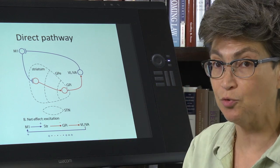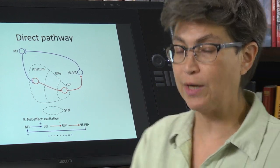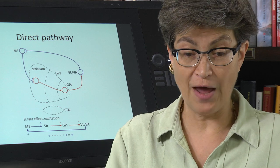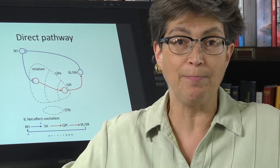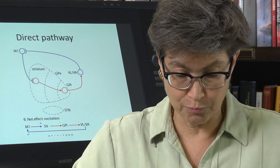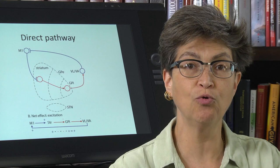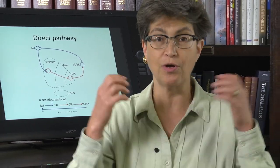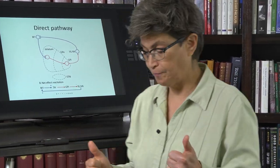They will release the movement. The direct pathway is the way that we get out from underneath that wet blanket that suppresses all movement in order to make a movement. That's what the direct pathway is doing.